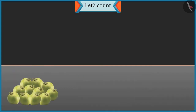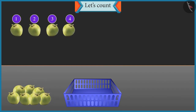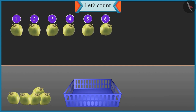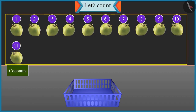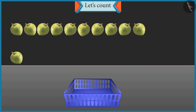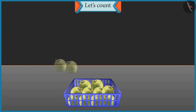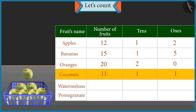Now count these coconuts and place them in the basket. Okay. One, two, three, four, five, six, seven, eight, nine, ten and eleven. So how many groups of ten coconuts are there, and how many single coconuts are left? There is one group of ten coconuts and one single coconut left. So it will be one tens and one ones in eleven. Absolutely right.